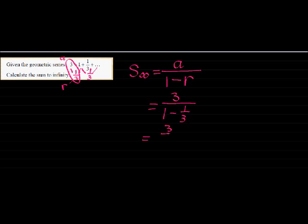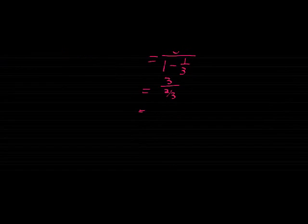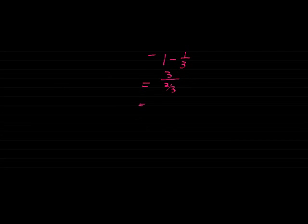So 3, 1 minus a third is two thirds. When I divide with a fraction, my students say you tip and times. I like that. So in the top we actually have 3 over 1, so we've got 3 over 1. Now we tip.